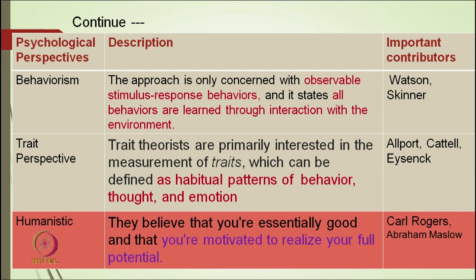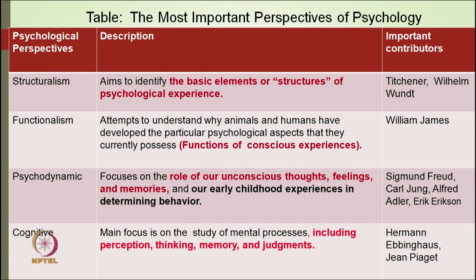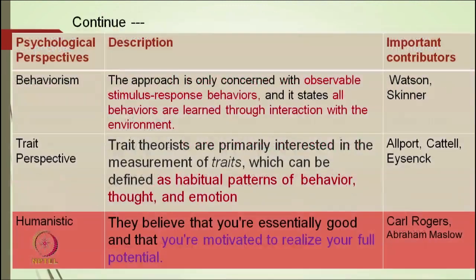Revisiting all these perspectives: psychoanalysis says behavior is mainly determined by childhood experiences; cognitive psychologists say behavior is mainly contributed by thinking processes; behaviorism says behavior is learned through stimulus-response and gives importance to environmental factors; and trait psychology says personality is a composition of certain traits — habitual patterns of behavior, thoughts, and emotions. So to some extent, behavior is determined by certain factors described differently by each perspective.